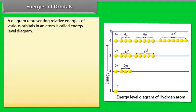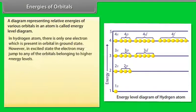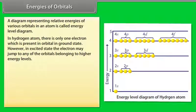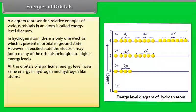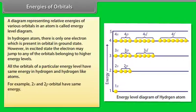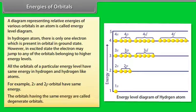A diagram representing the relative energies of various orbitals in an atom is called an energy level diagram. In the hydrogen atom, there is only one electron present in an orbital in the ground state; in the excited state, it may jump to any orbital of a higher energy level. All orbitals of a particular energy level have the same energy in hydrogen and hydrogen-like atoms — for example, 2s and 2p orbitals have the same energy. Orbitals having the same energy are called degenerate orbitals.